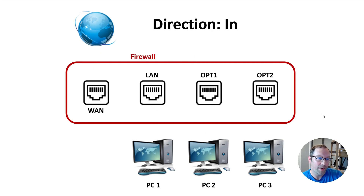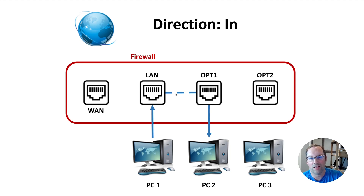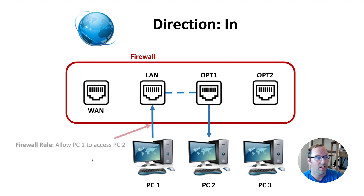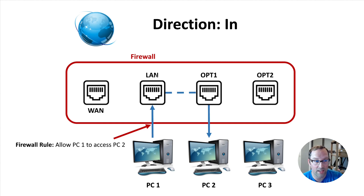So with direction in, we have the firewall with its interfaces and our PCs. Let's say we have a flow going between PC one and PC two — going into the LAN interface and out of Optional One. To allow PC one to access PC two, the firewall rule with direction in is actually placed on the LAN interface, where PC one resides, to allow it to reach PC two on the Optional One interface.